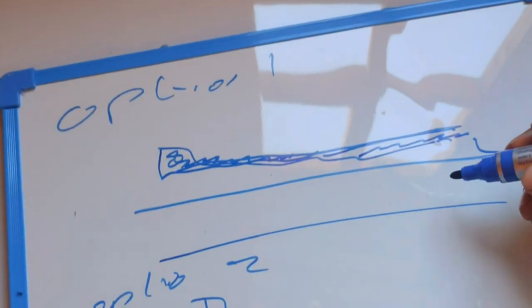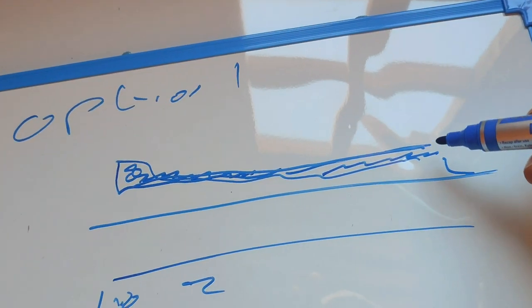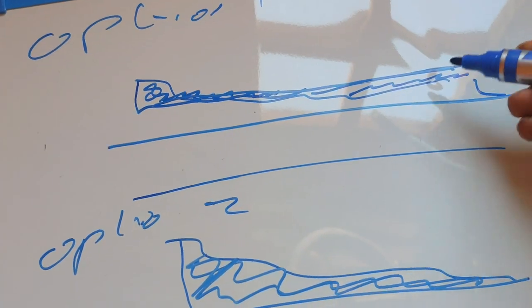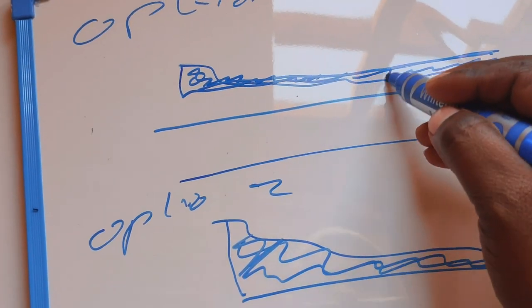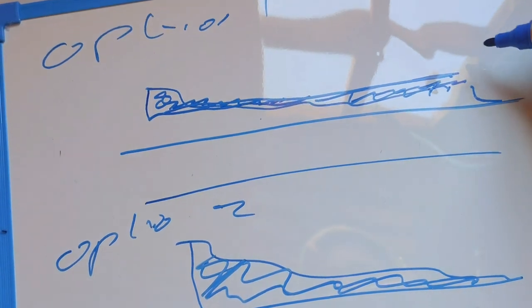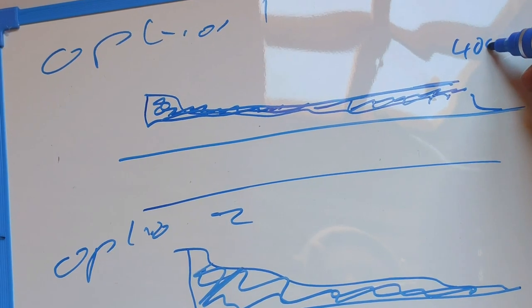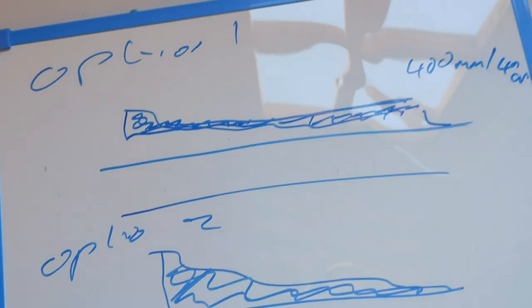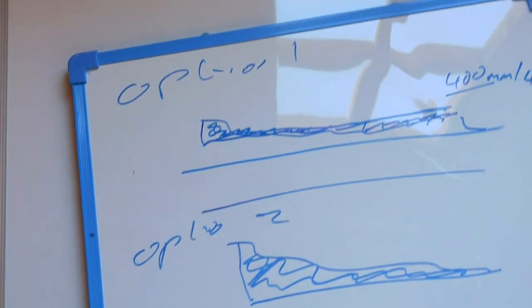This is the option I went with. The reason I did not go with this particular option - the building regulations say that if the fill is greater than 400 millimeters or 40 centimeters, then this has to be done by an engineer.